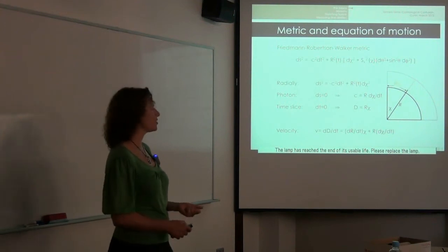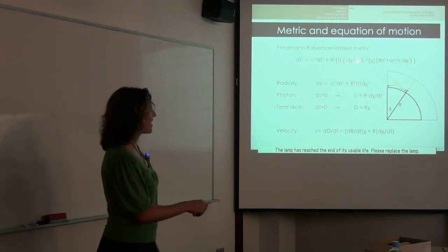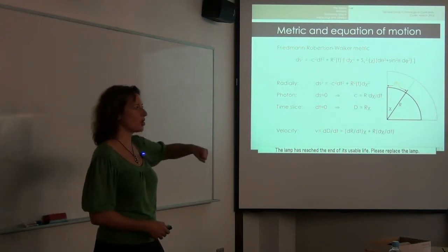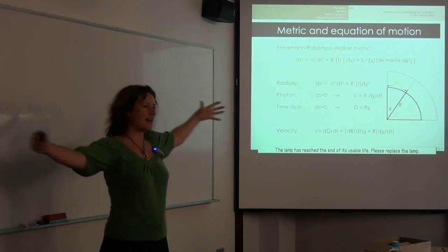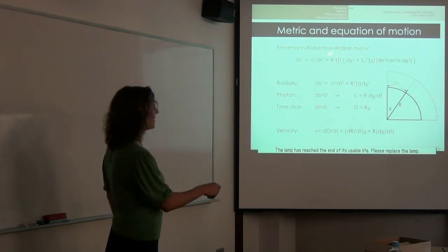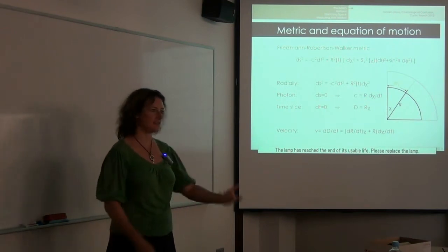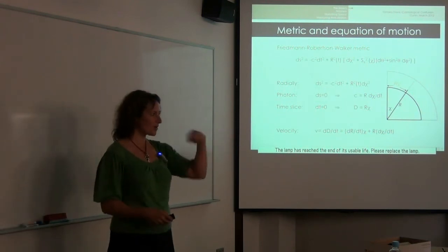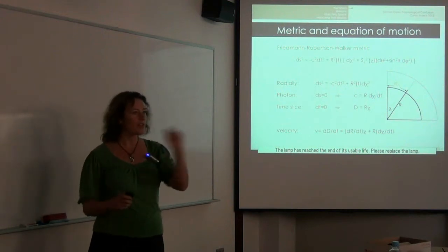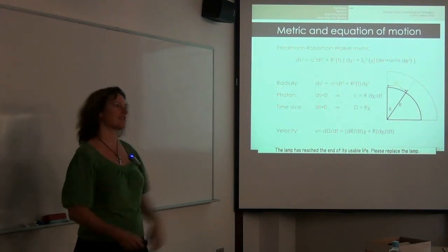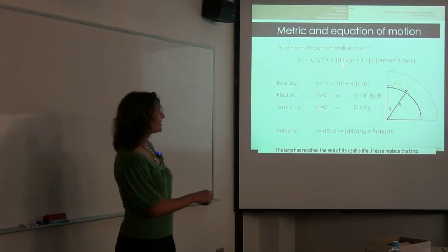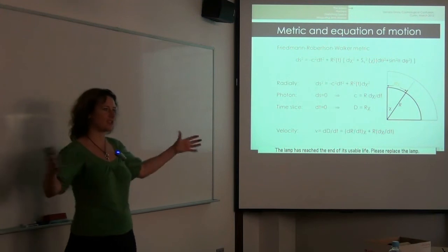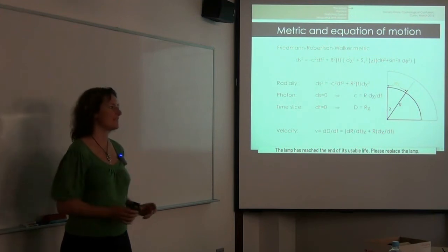So when we describe the expanding universe, this chi here is the co-moving coordinate. Galaxies sit still with respect to co-moving coordinates and all of the expansion is taken into account by the scale factor. In reality, that's not entirely the case. Galaxies have small peculiar motions, so any peculiar velocities that are not just the expansion of the universe come in terms of changes in their co-moving position. So we split up the expansion from the movement of things within the expansion.